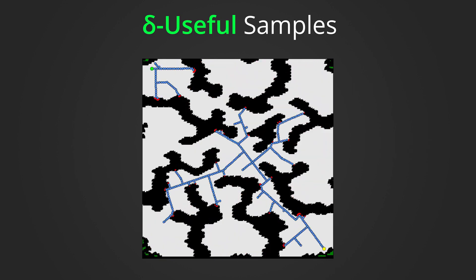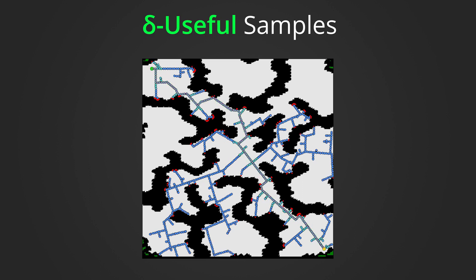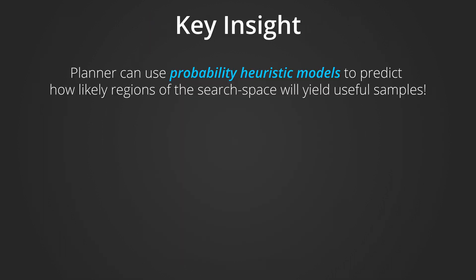Looking at RRT Connect solving the same problem, we see that a higher percentage of total samples are delta useful, but still more than 70% of the samples are not useful with respect to the current planning problem. Note that the definition of delta useful samples implies that it is unknowable whether a sample will be useful or not until a final solution is found.